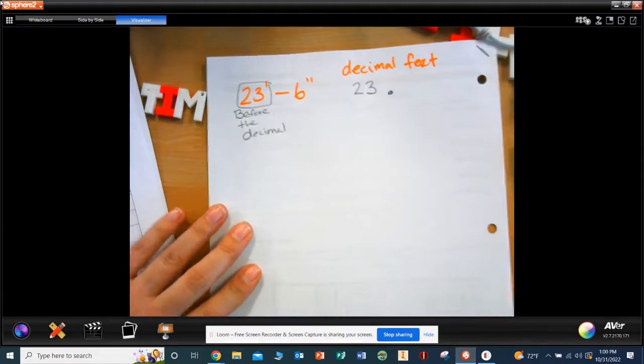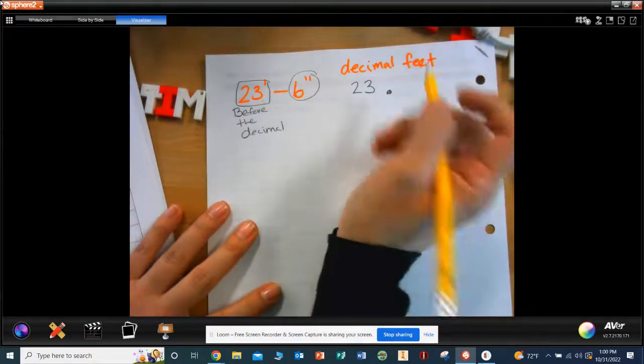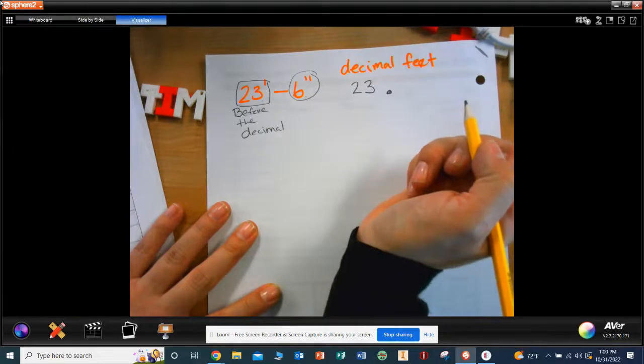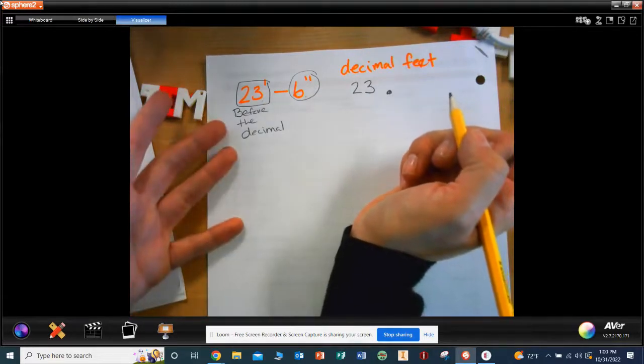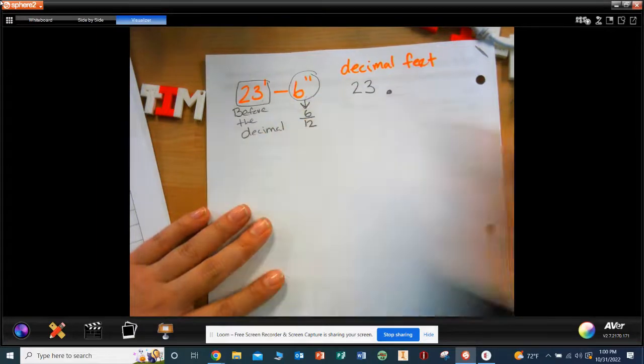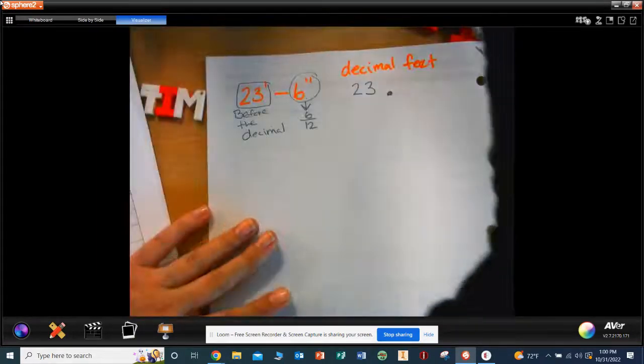Now the 6 inches. What is 6 inches out of 12? Because how many inches in a foot? 12. So this is 6 out of 12. Does everybody understand why it's 12? Because there's 12 inches in a foot.